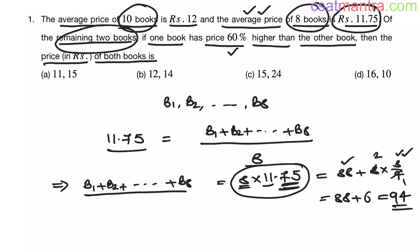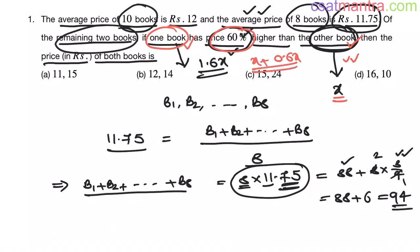Now, of the remaining 2 books, one book has price 60% higher than the other book. Let's assume the other book price as X. This book price will be 1.6X. 60% of X is 0.6X. This book price will be X plus 0.6X, that is 1.6X. This is clear, right?